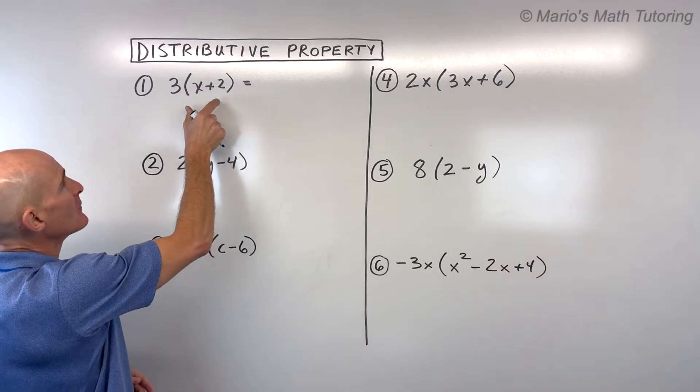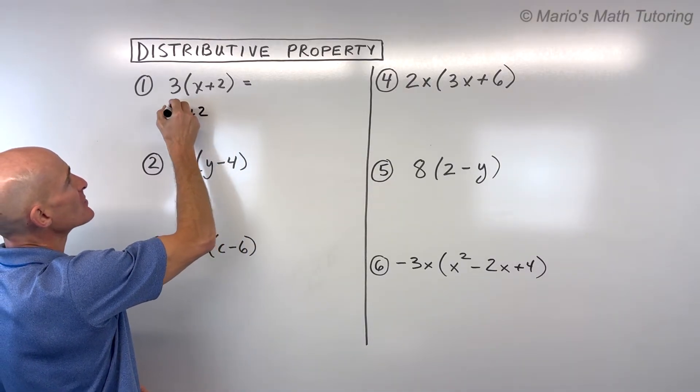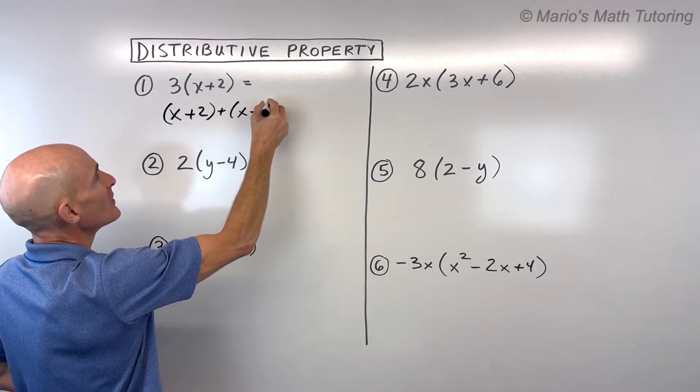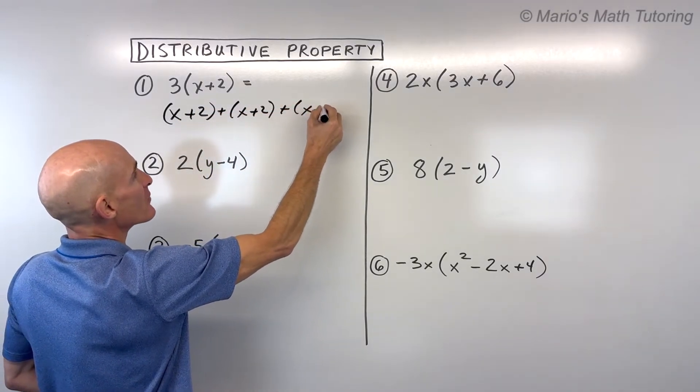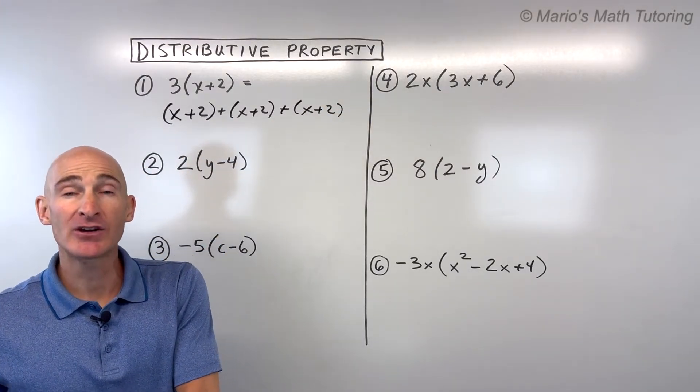The long way is to think of, you've got this x plus two, but you have three of them. So it's like x plus two, plus another x plus two, plus another x plus two. So you have three of those groups, and now what you're going to do is combine like terms.